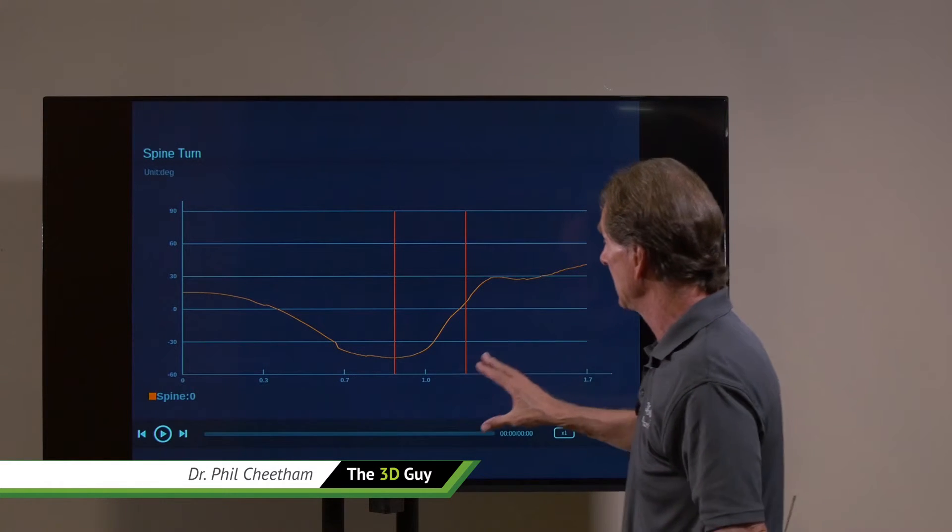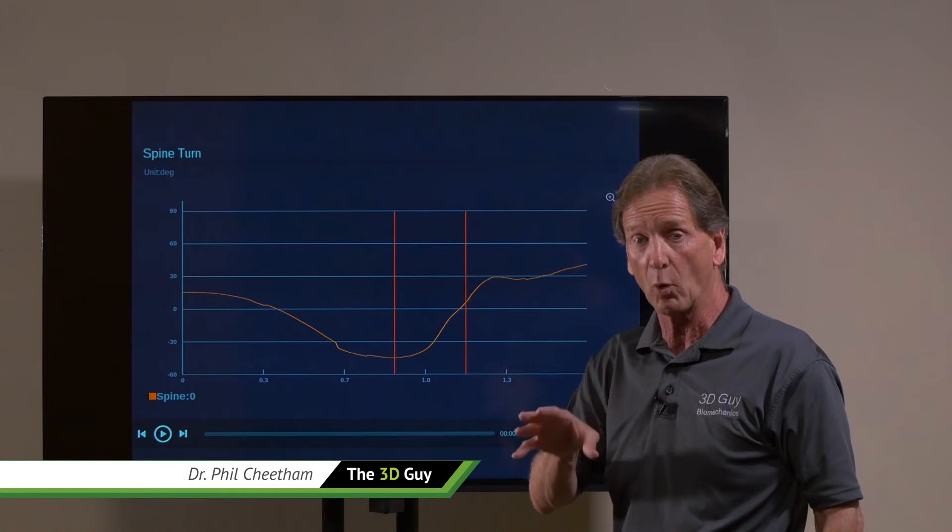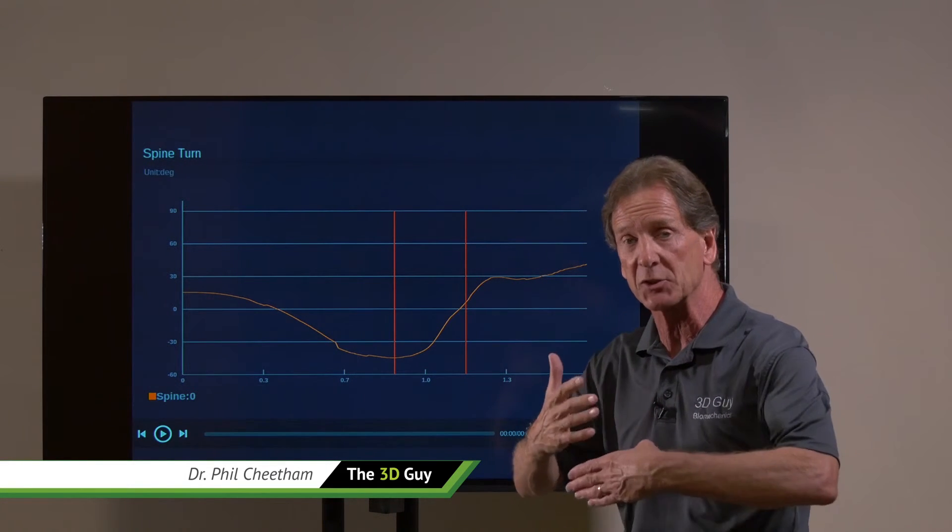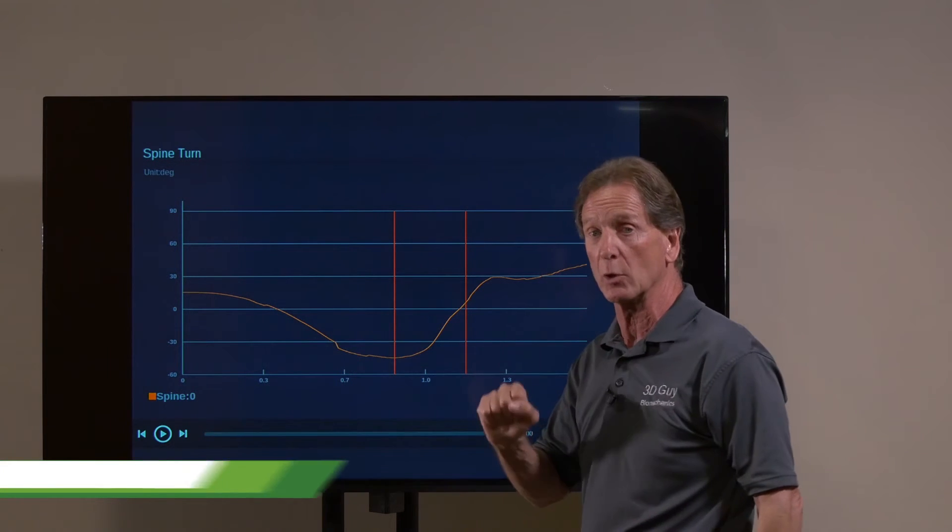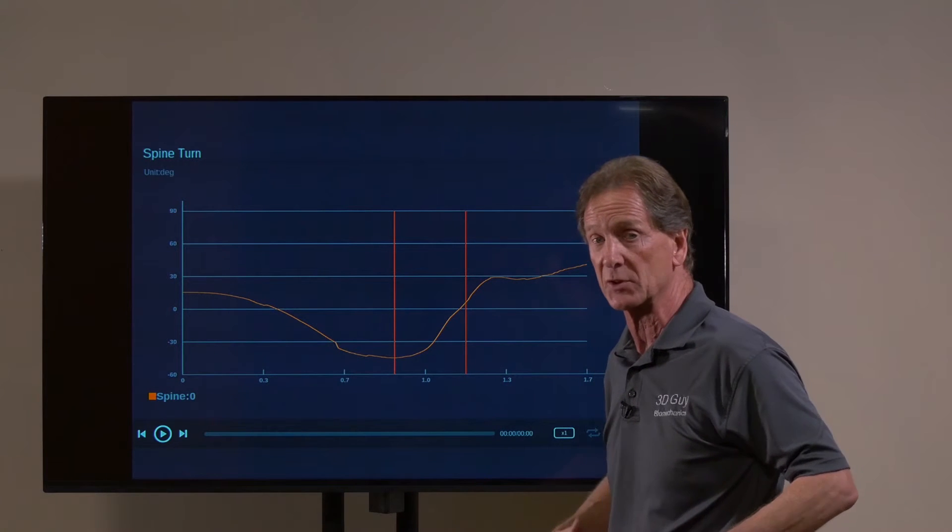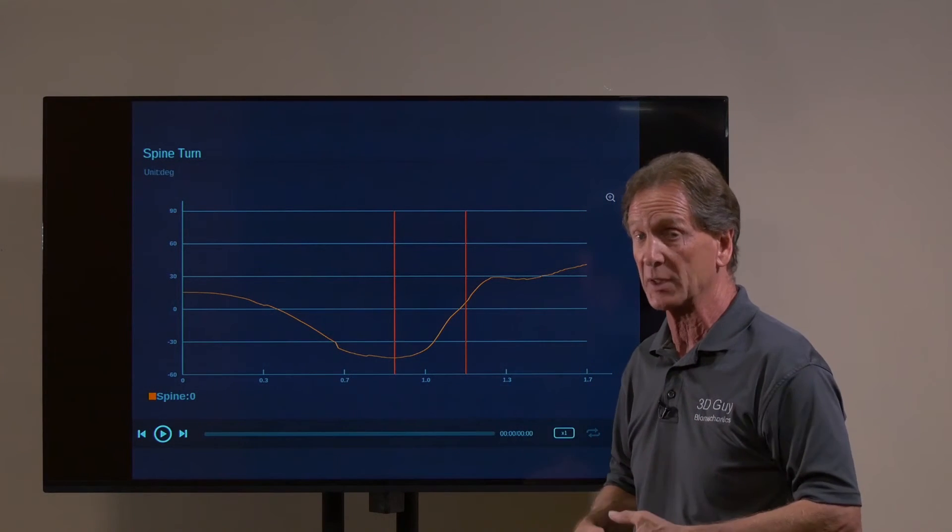Now what we would like to see is we'd like to see that increase a little bit more in the downswing so that we get a stretch or an extra coil or an extra spine turn. That would load the spine, load the core muscles, and allow us to be stronger in the downswing, set up the downswing to be more powerful.